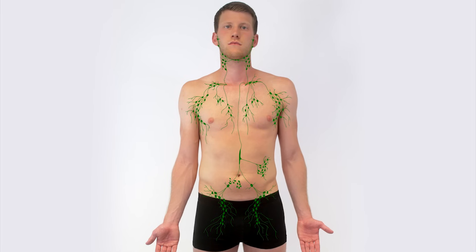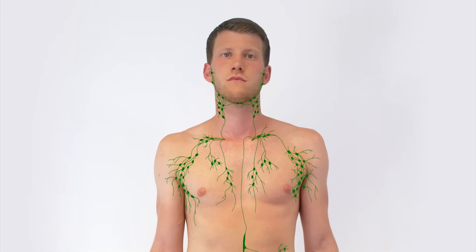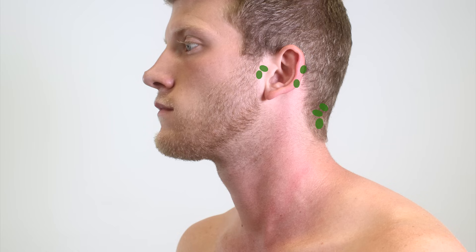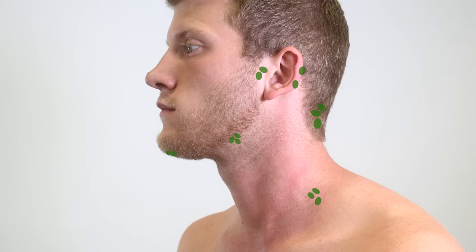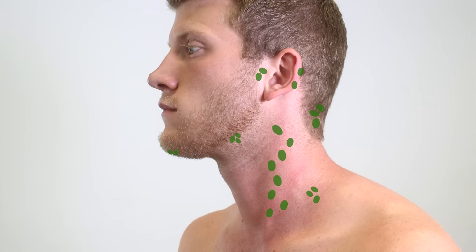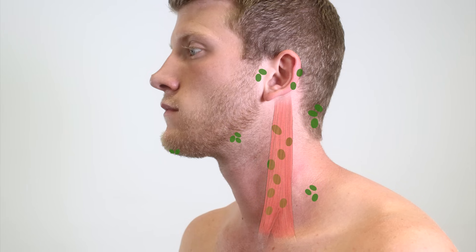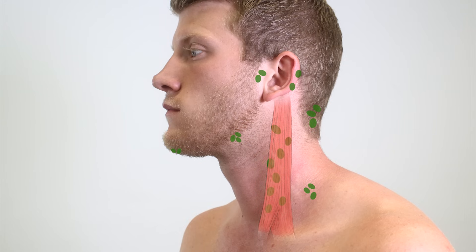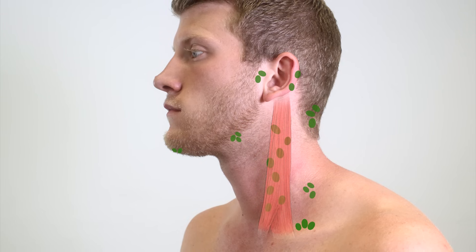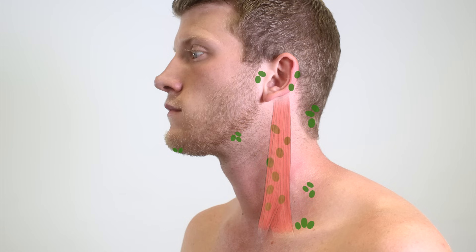Around one-third of all lymph nodes are located in the head and neck area, where they can be found superficially and are therefore easily palpable. The following lymph nodes should be included in every palpation: suboccipital, retro and pre-auricular, submandibular, submental, posterior triangle of the neck, and those within the area of the internal jugular vein, which lie deep within the neck and may be palpated ventral or dorsal to the sternocleidomastoid muscle. Additionally, the supraclavicular lymph nodes should be palpated as well, since enlargement of these lymph nodes is often associated with malignancies.